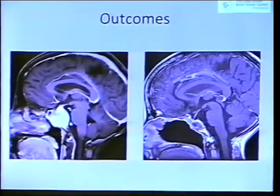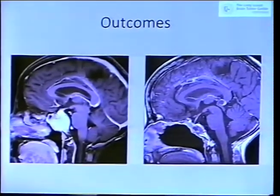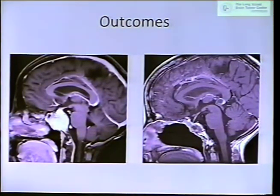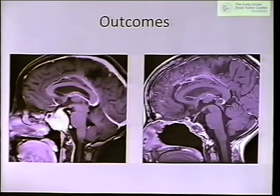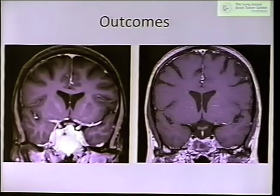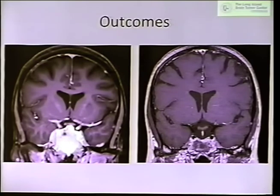In terms of overall outcomes — here's that hemangiopericytoma from the 30-year-old woman I presented. Postoperatively from an endoscopic approach, you can see the optic nerves are now completely free. The pituitary stalk is going down into the sella, and her pituitary function is completely intact. On the coronal view, the tumor is gone, the optic nerves and pituitary stalk are completely intact, and the carotid arteries are visible. We have very good outcomes from this approach. Thank you all very much — any questions?